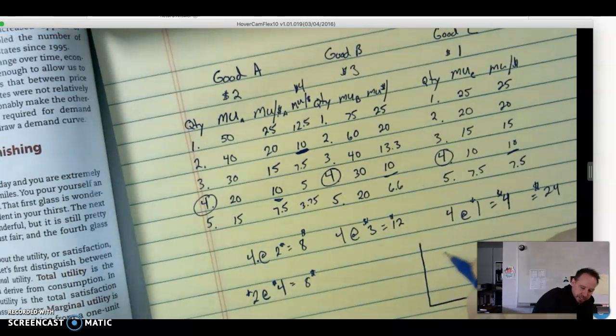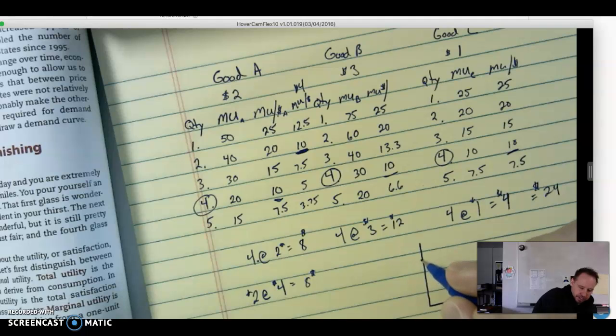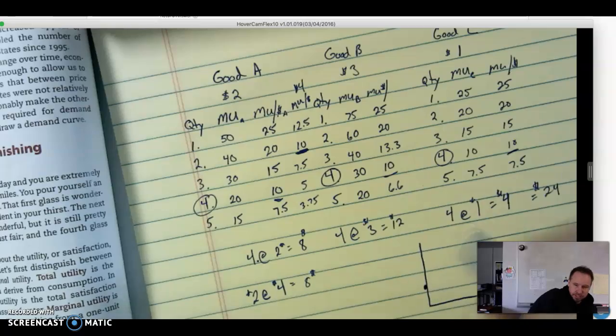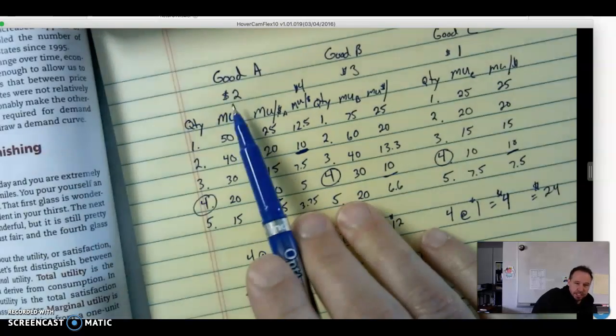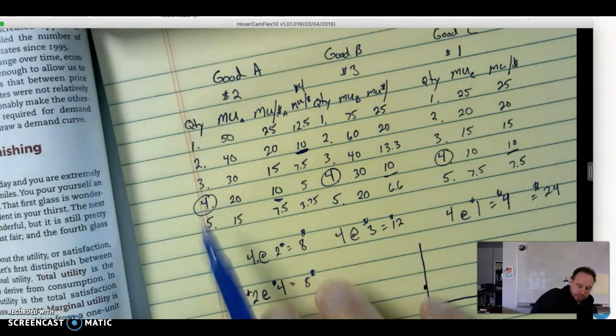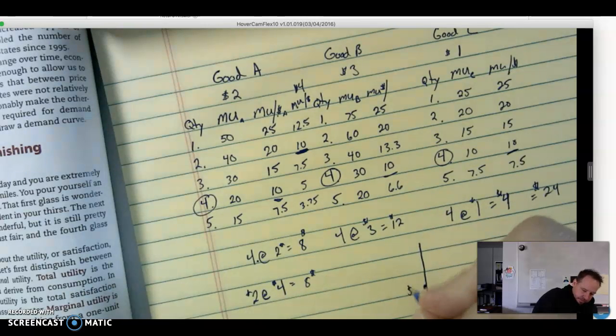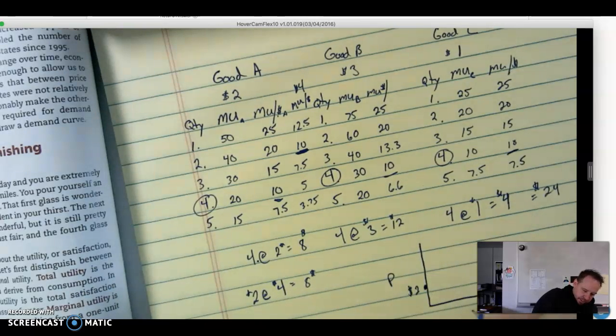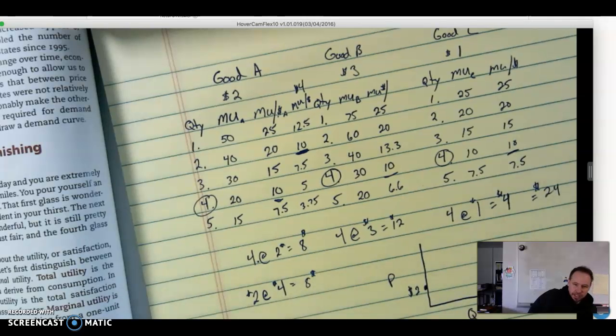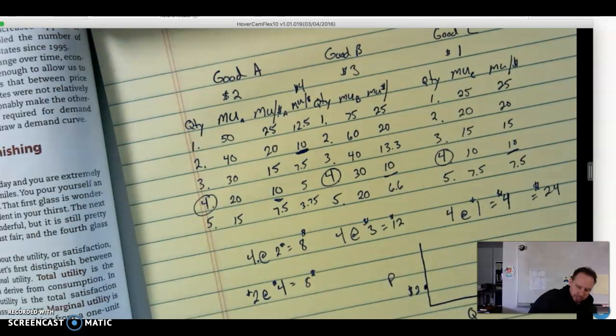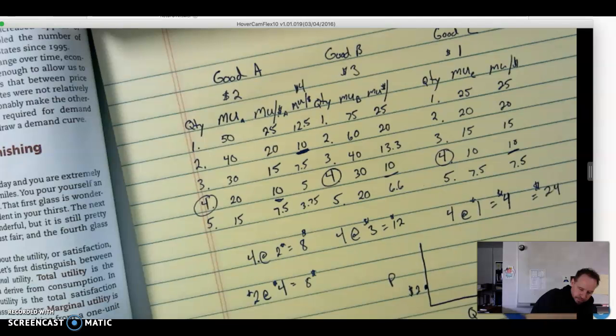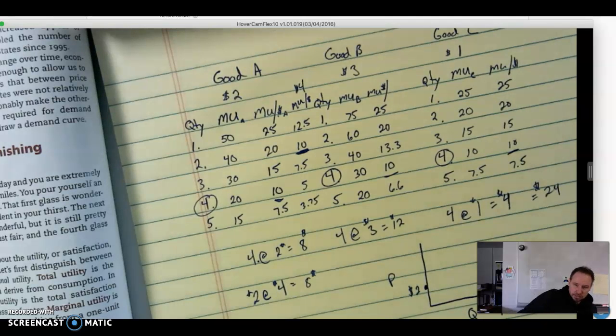We're assuming ceteris paribus, right? Everything else stays the same. Our original - at $2, good A, you can look right here. At $2 we were going to have a quantity of 4. So here's our price, here's our quantity, and we'd come out quantity of 4. That would be our first spot on that demand curve.